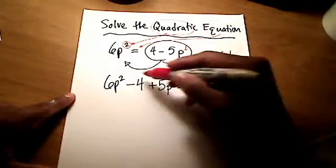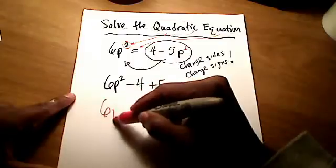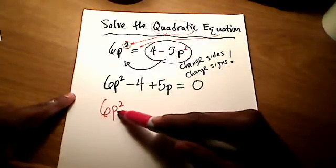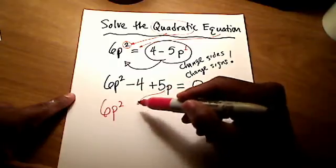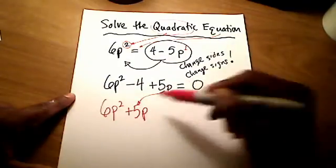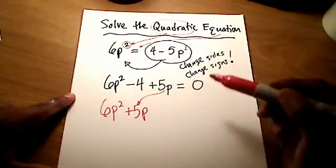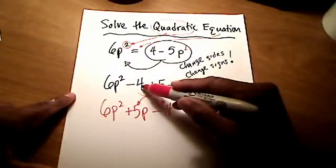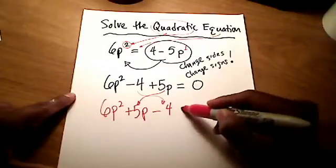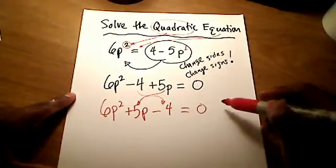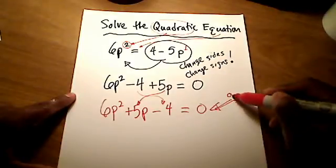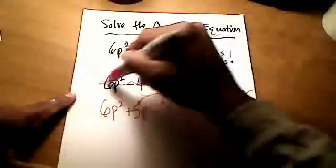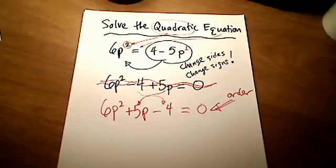So this 4, which is a positive 4 on the right-hand side, is going to be a negative 4. And this negative 5p on the right-hand side, when you move it over, is going to be a positive 5p. Hopefully you see that we've moved these two over. I've got nothing on the right-hand side. Just set it equal to 0. But there's something a little wrong with this equation. Do you notice that these terms are not in descending order?